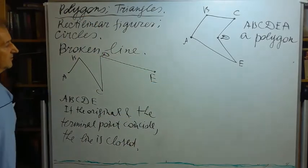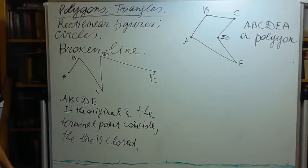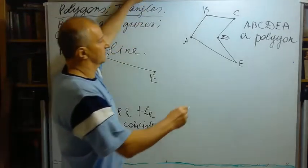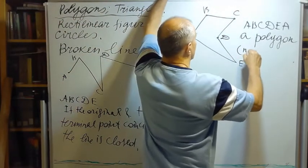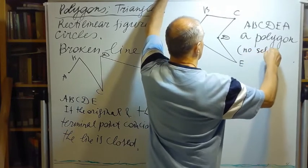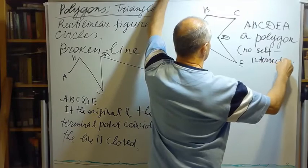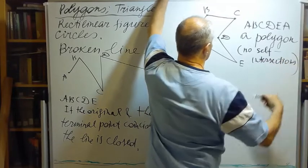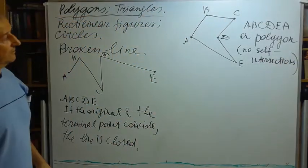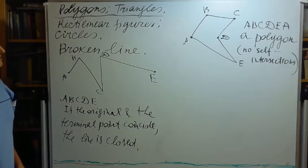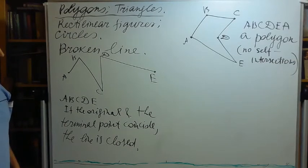Let's try to be very specific. We will also call it usually a polygon when there is no self-intersection. So from this point, A, B, C, D, E, A is a polygon.